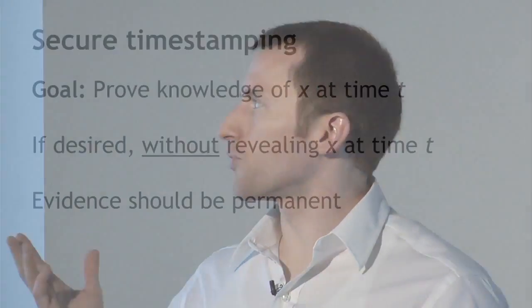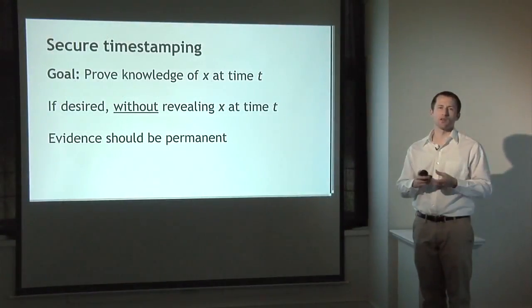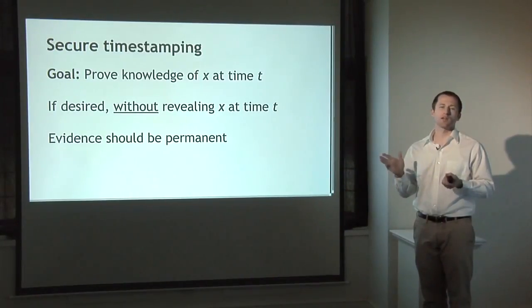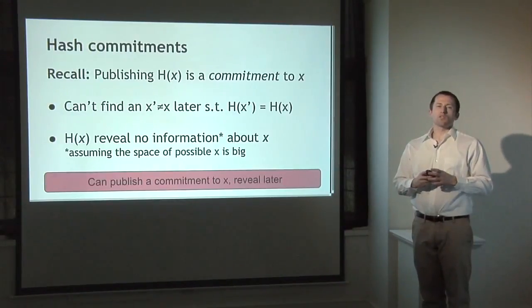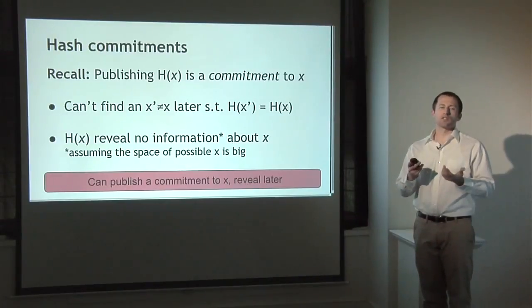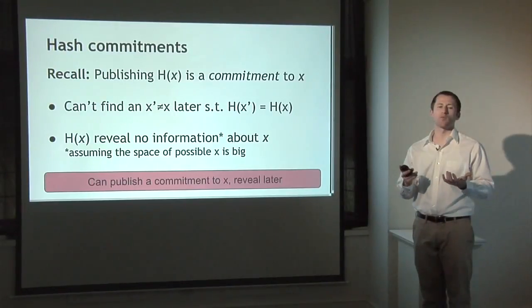What we'd like to build using this is secure timestamping. The goal is to prove that we know some value x at a specific time t — no later than time t. Often we want to prove we know x without revealing it at time t, but revealing it later. The evidence should be permanent: a permanent record that we knew some information x at time t or earlier that nobody can ever destroy. We can use hash functions to commit to data, publishing the hash of x instead of x itself. The properties of the hash function guarantee we can't later find some other value x-prime with the same hash.